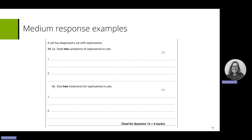Medium responses will normally be an answer that's a bit more expanded. For example, you've got a little scenario at the top, then you need to state the symptoms — literally state them — then state the two treatments. They don't need to explain the treatments or the symptoms, they just need to state them. Some questions may have part A as 'give two symptoms' and part B as 'explain how you would do something', so it builds on it a bit more.